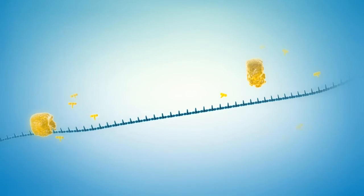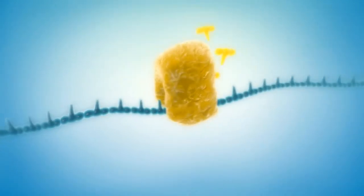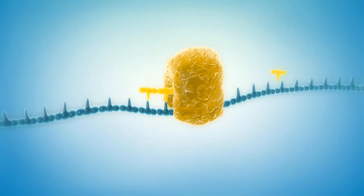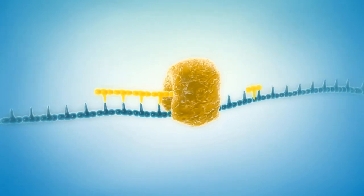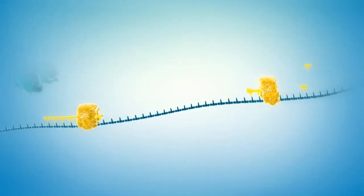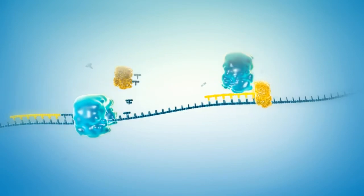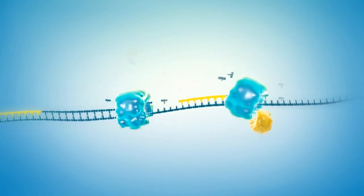Primpol binds denatured DNA at different recognition sites and synthesizes small fragments of DNA that will act as primers for 529 DNA polymerase. Once the primers are long enough, 529 DNA polymerase displaces Primpol and starts DNA polymerization using these primers.